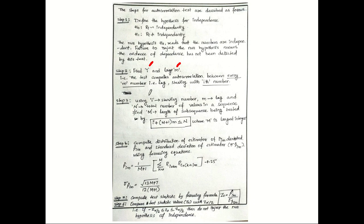In Step 2, we find the value of i and small m, where i indicates the starting number and m indicates the lag — that is, the test computes autocorrelation between every m numbers. In Step 3, using i (starting number), m (lag), and N (total number of values in the sequence), we find capital M, which is the length of the subsequence being tested — specifically the largest integer satisfying a given condition.